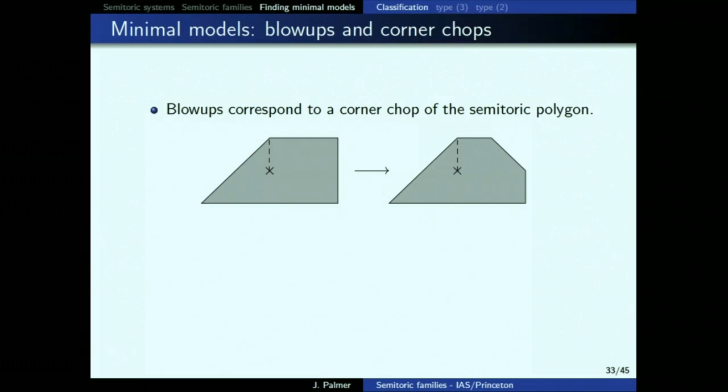So the combinatorics of what the polygons look like as you do blowups of different sizes is a little more complicated. For example, if you have a polygon that looks like it doesn't admit a blowdown because there's no real corner, you realize that if you choose one of the other polygons — cut the other direction — now it does admit a blowdown. So it's sort of hard to see what's going on if you just look at one polygon.